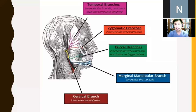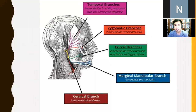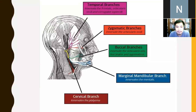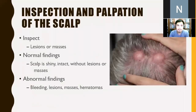The branches of the facial nerve are: temporal, zygomatic, buccal, mandibular, and cervical. The mnemonic for this is: Two Zombies Beat My Cow — temporal, zygomatic, buccal, mandibular, and cervical.